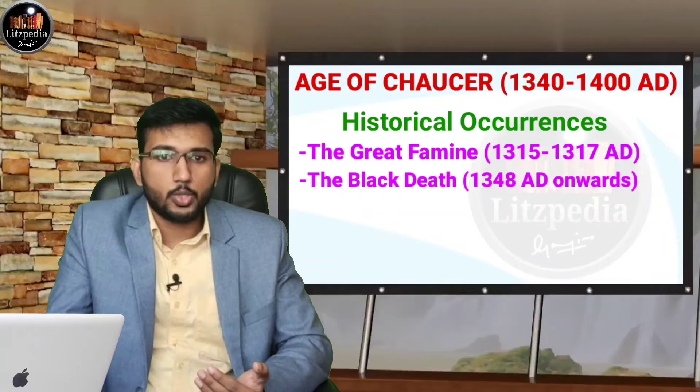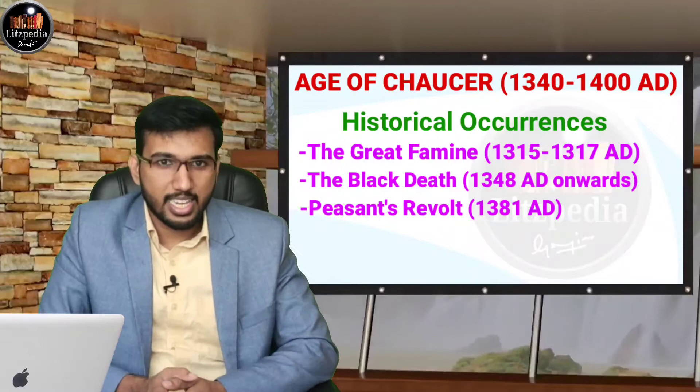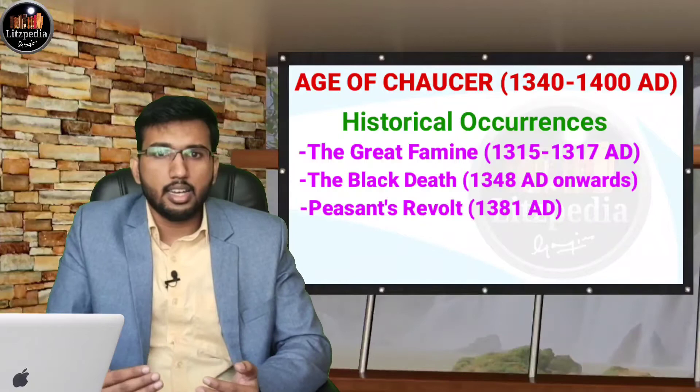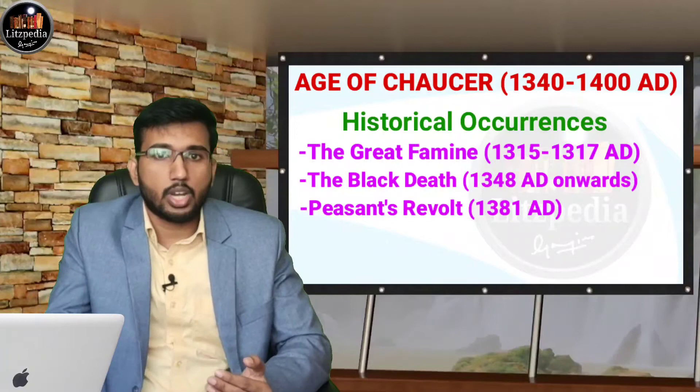After the Black Death, we can see the Peasants' Revolt. 1381 is the year in which the Peasants' Revolt occurred. It was an aftermath of the Black Death, resulting from economic and political insecurities of the time. The immediate cause was King Richard II's attempt to collect a poll tax, and as a response to that, the Peasants' Revolt occurred.